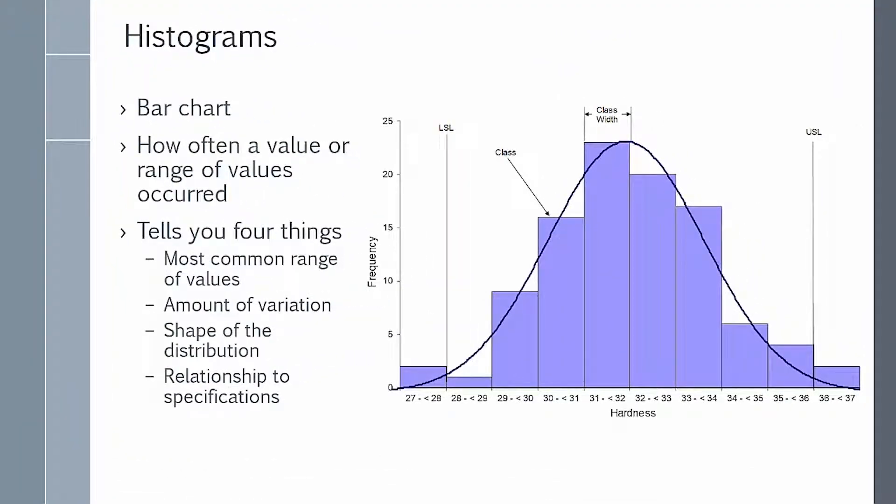Quick review of histograms. First of all, it's a bar chart that shows how often a value or range of values occurred during a certain time period. Typically, it tells you four things.